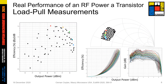Let's evaluate this load pull measurement data a bit more. I marked some efficiency values in this figure. It's very clear how the different load impedances affect efficiency and output power. There is no one impedance value providing the maximum efficiency, power, and gain at the same time. There is always some trade-off in high-power amplifier design. Therefore, as a designer, you need to pick a suitable load impedance meeting your design goals, depending on performance requirements of your amplifier and final system design.